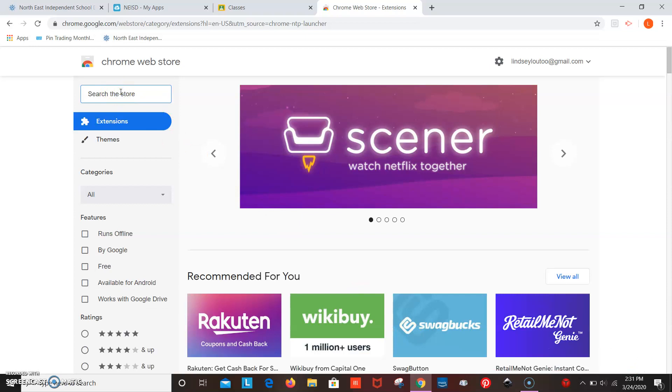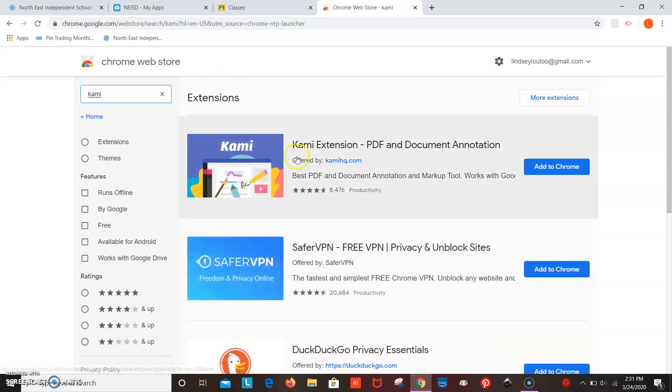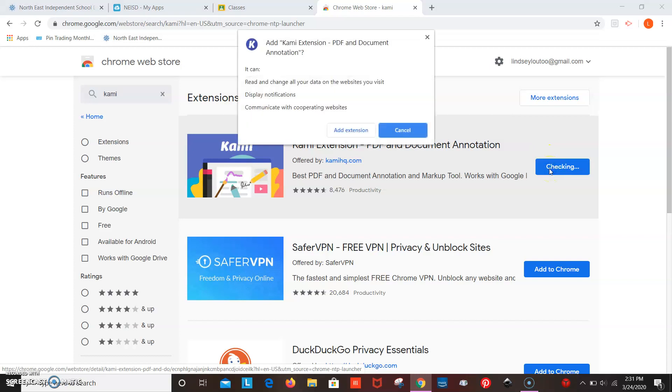You're going to search the store for an extension called Kami. K-A-M-I. It is this right here. You need to add this to Chrome. It's going to ask you, do you want to allow this? And you say add extension.